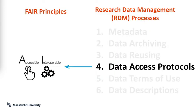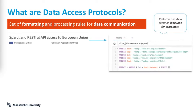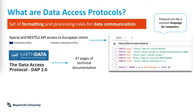Data access protocols — this concerns the accessibility and interoperability of data. Data access protocols are formatting and processing rules for data communication. In other words, protocols are like a common language for computers. Take the European Union Public Data — you can access it via an API endpoint using SPARQL query language. Sometimes access protocols can be a hassle; the NASA AirData access protocols are like 47 pages of documentation.